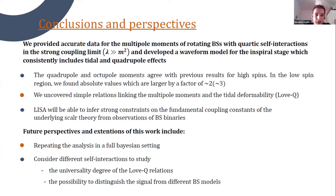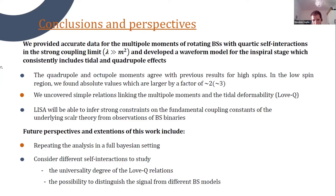Future perspectives include repeating the analysis with actual Bayesian testing and including more accurate data, and considering different self-interactions to study the universality degree of these relations — we found simple relationships for one realization of self-interactions, and with different boson star models we can also study the possibility to distinguish signals for model selection. Thank you for the attention.